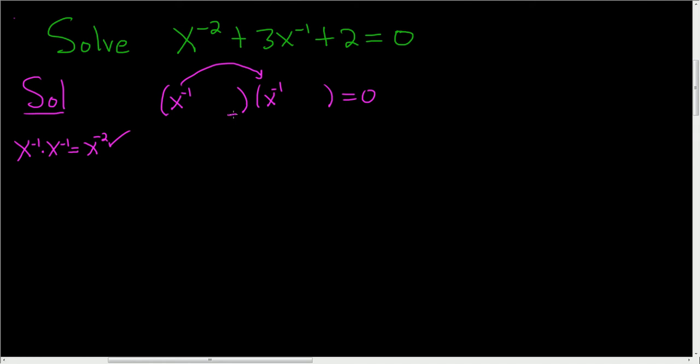Now we just need to figure out what goes here. We need two numbers that multiply to 2 but add to 3. So the numbers 2 and 1 both work. Because if you look at 2x to the negative 1 and x to the negative 1, that gives you 3x to the negative 1. So the inside plus the outside always gives you the middle term.